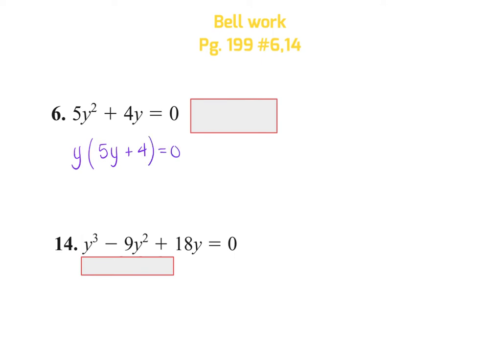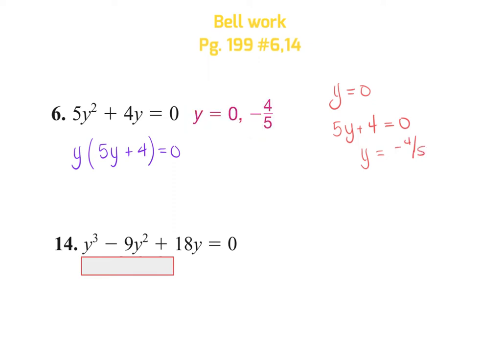Once you have factored it, you're going to set each factor equal to zero and solve. The y factor is automatically solved — that gives y equals zero. For the other factor, you're going to subtract the four and divide by the five. So you will get zero and negative four-fifths as your answers.